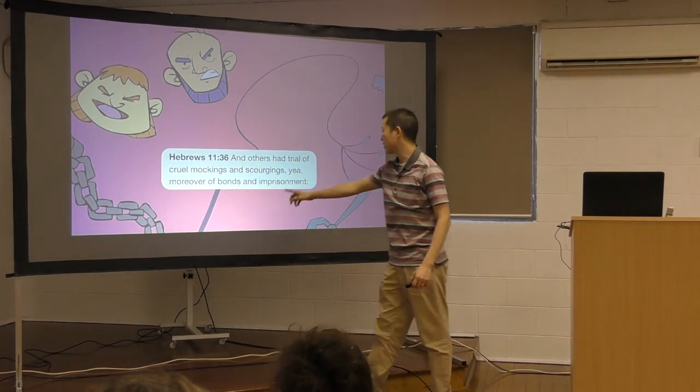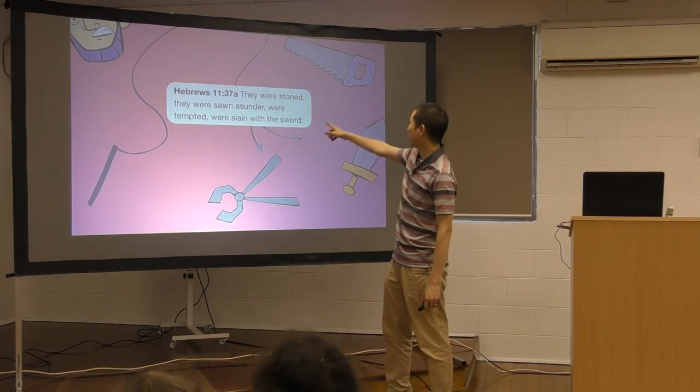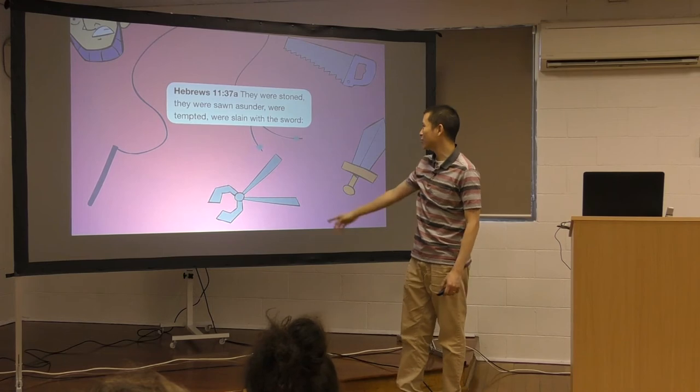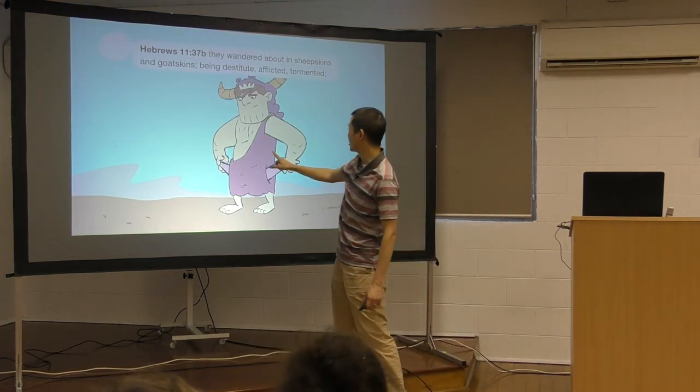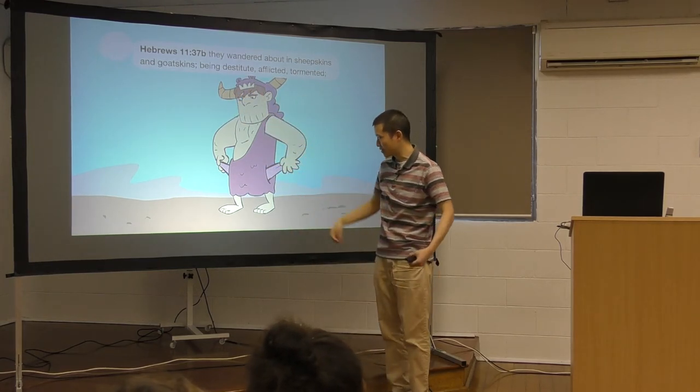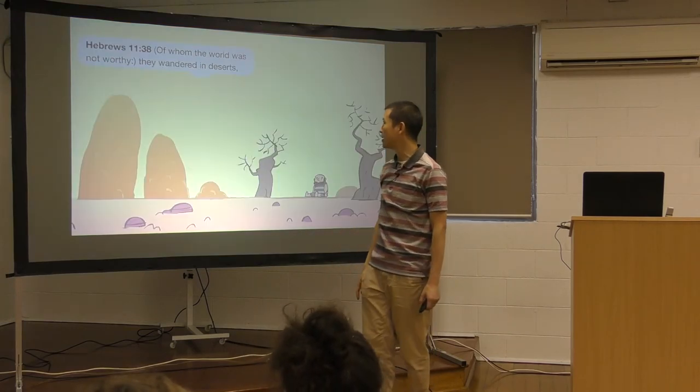Others had trial of cruel mockings and scourgings. Yea, moreover of bonds and imprisonment. They were stoned. They were sawn asunder. They were tempted, were slain with the sword. They wandered about in sheepskins. Look at his clothing. Goatskins. And being destitute, afflicted, tormented. Destitute is when you have nothing. Look, he's got nothing in his pockets. No food, no money.